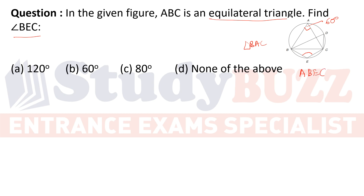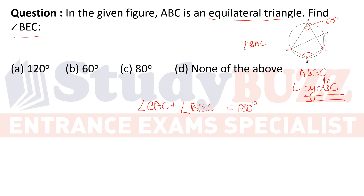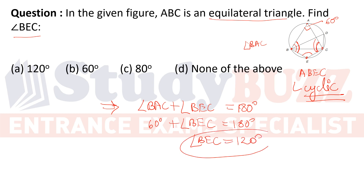For cyclic quadrilateral ABEC, the property is that opposite angles sum to 180 degrees. So angle BEC + angle BAC = 180 degrees. Since angle BAC = 60 degrees, angle BEC = 180 − 60 = 120 degrees. Option A is correct.